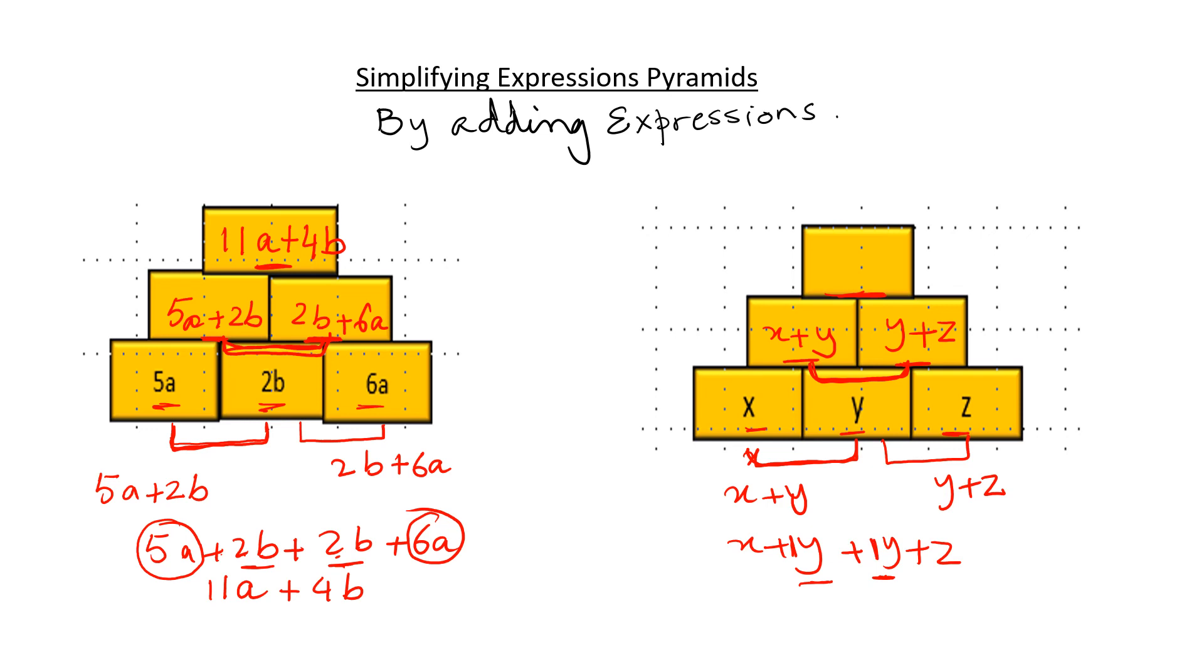It is 1. So 1y plus 1y is 2y, plus x as it is, and z as it is. I cannot simplify these further. So I have to write x plus 2y plus z. This is how I simplify expressions by using the pyramid.